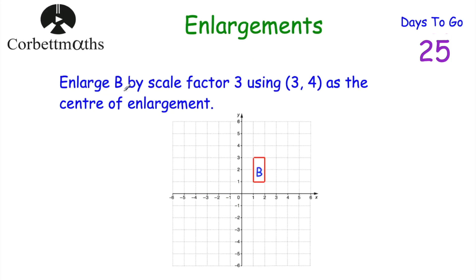Our first question is to enlarge shape B by scale factor 3 using (3, -4) as the centre of enlargement. Feel free to pause the video and think about how you would do that, then press play when ready. To enlarge shape B, we first plot the centre of enlargement at (3, -4). All points of B are going to become three times as far away from the centre of enlargement.